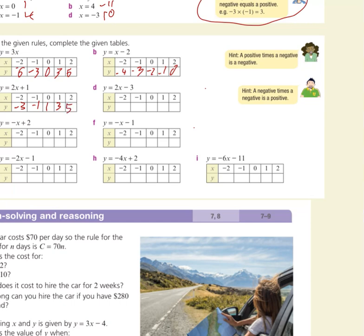For y equals 2x minus 3: minus 4 take 3 is minus 7, then minus 5. It's going up by 2 every time.